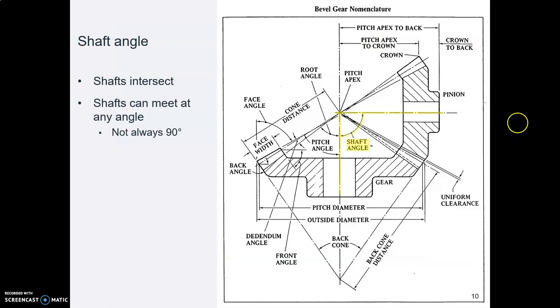This picture out of Machinery's Handbook shows two bevel gears in mesh. So there's one bevel gear that's more or less vertical and a second bevel gear that's more or less horizontal. And what you can see here is that the center lines of those two gears intersect, and that is always true with a bevel gear.